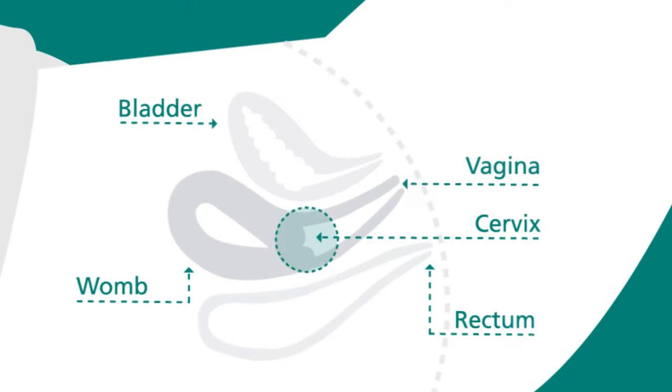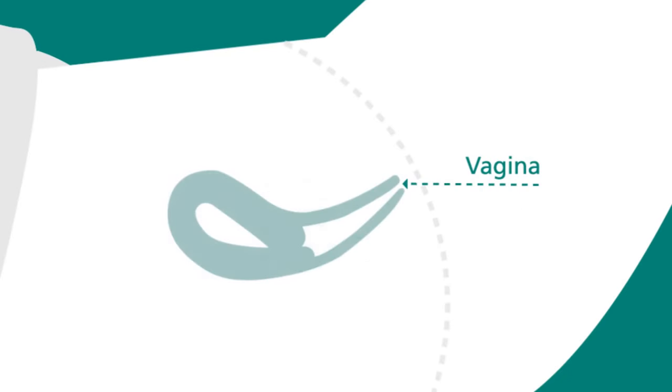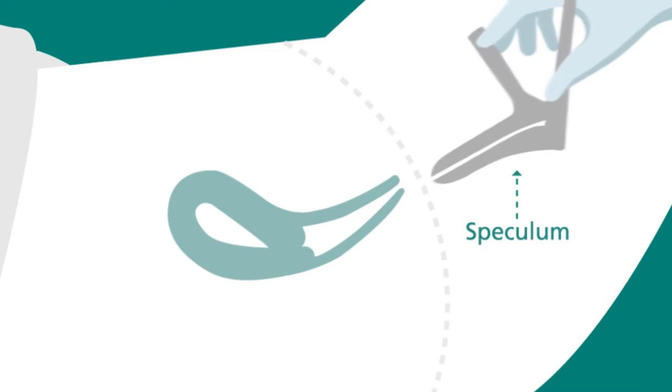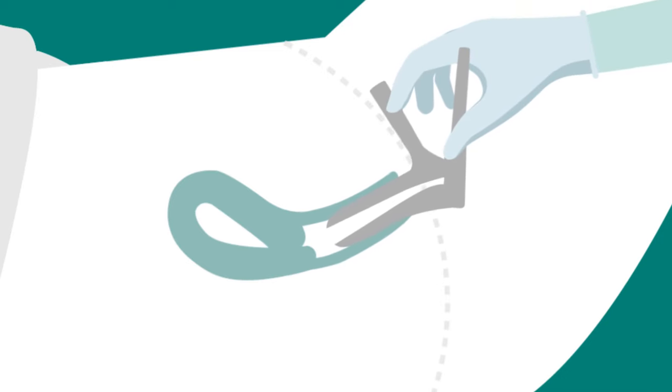A smooth, tube-shaped tool called a speculum will be inserted into your vagina and used to open the walls of the vagina so that your cervix can be seen.